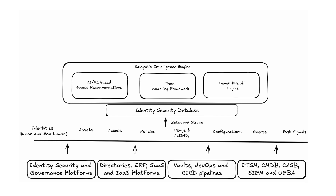On top of this next-gen data lake sits our intelligence engine, which has three core dimensions. First, we have our AI and ML based access recommendations — the third iteration of our recommendations engine. Second, we have an enterprise-grade flexible trust modeling framework, a very new way of thinking about how to aggregate all risk signals, consolidate them into a single score, and give that as an indicator for decision makers.